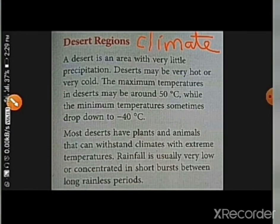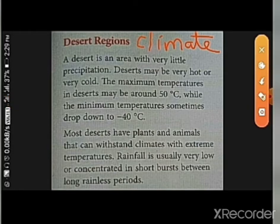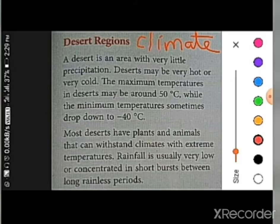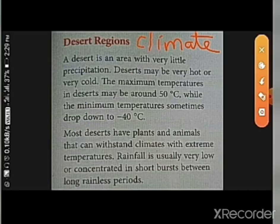How is the climate of the desert region? Climates in deserts are generally very hot and dry weather conditions. A desert is an area with very little precipitation — precipitation means rainfall. Deserts may be very hot or very cold; we have two types of deserts: hot deserts and cold deserts.